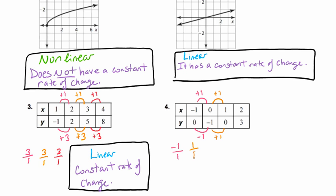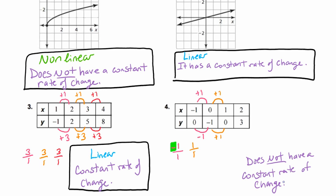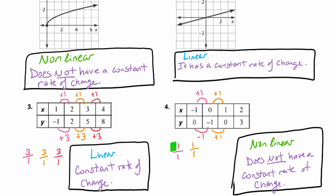I'm going to stop right here, because even though they both have a 1 on top and a 1 on the bottom, we have an issue — this one is negative 1, and the other doesn't have that; it's positive. So right away we can see this does not have a constant rate of change — it varies. That tells us we have a non-linear function here. And that's how you determine if a function is linear or non-linear using its graph or a set of points.